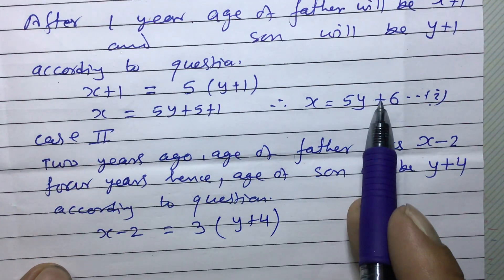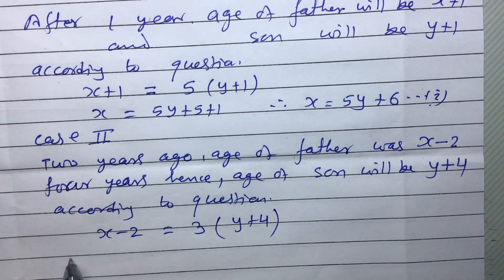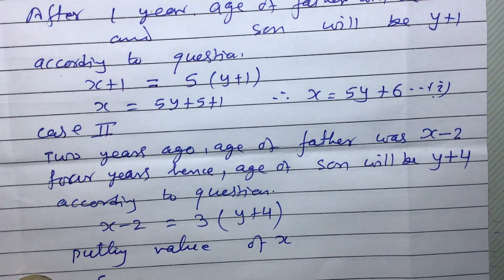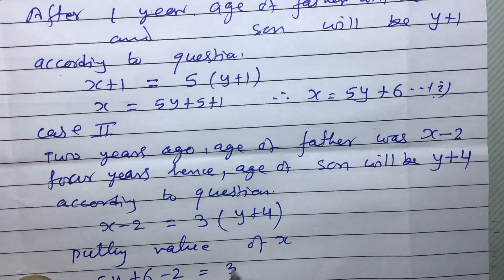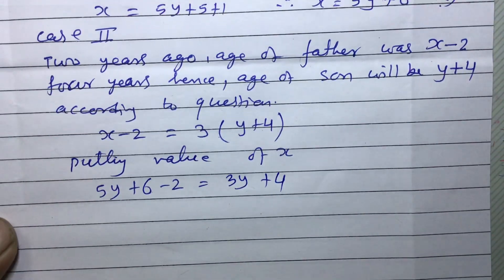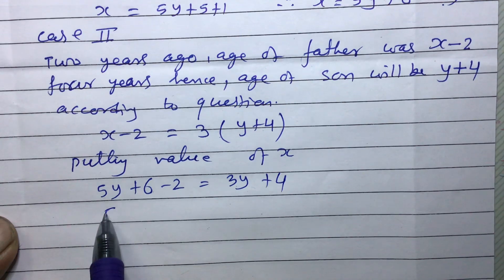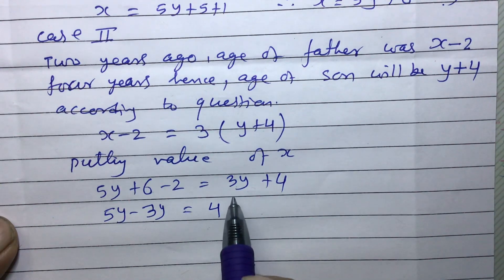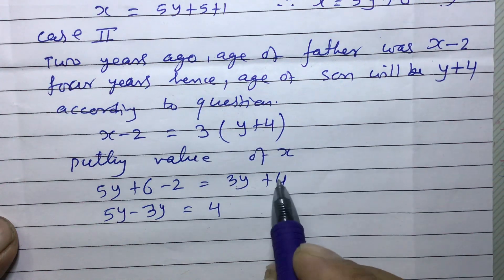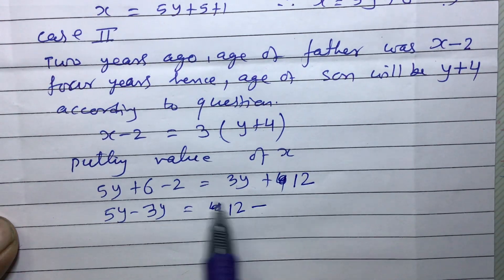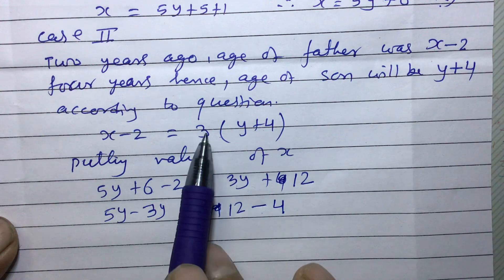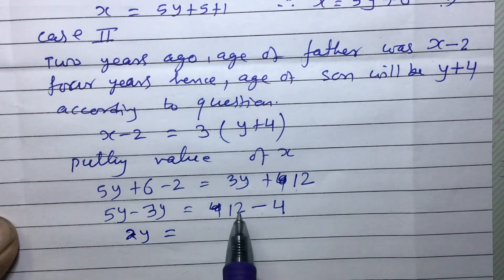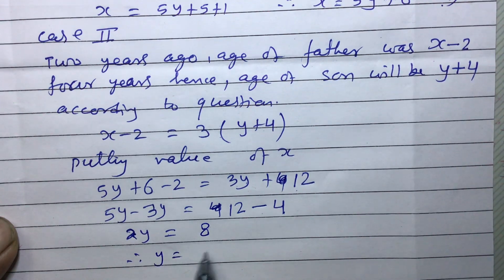The substitution method may be easier here. We can put the value of x — which is 5y + 6 — into equation two: 5y + 6 − 2 = 3(y + 4), which gives 5y + 4 = 3y + 12. Rearranging: 5y − 3y = 12 − 4, so 2y = 8, therefore y = 4 years. We got the age of the son.